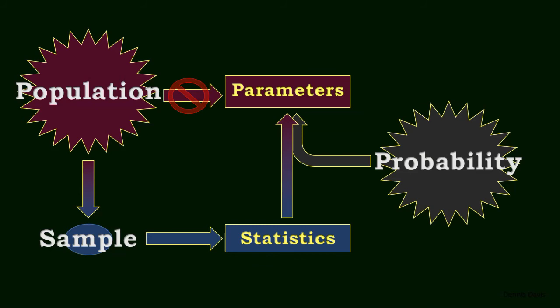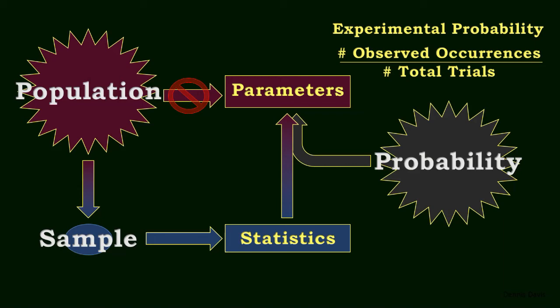Experimental probability applies when true probabilities are not known or are unknowable. It's the number of observed occurrences divided by the total number of trials. This is how frequency distribution tables can be interpreted as probability distribution tables.